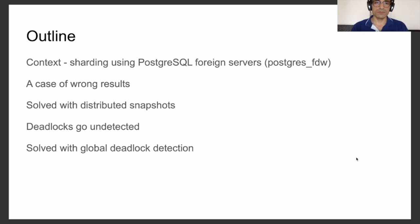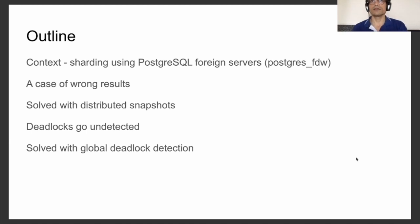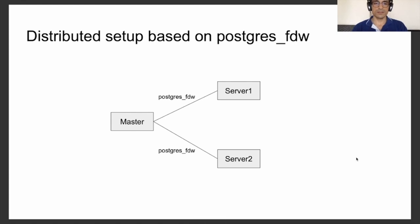The sharded system we are concerned with today comprises of a few foreign servers connected with Postgres FDW. We shall see in this system how easy it is to get wrong results, and we will see a solution by means of distributed snapshots that solves this problem and achieves correct results. Then Hubert will lead us through steps to realize how easy it is to get into deadlock and how built-in deadlock detection capabilities of Postgres are not sufficient in such a setup.